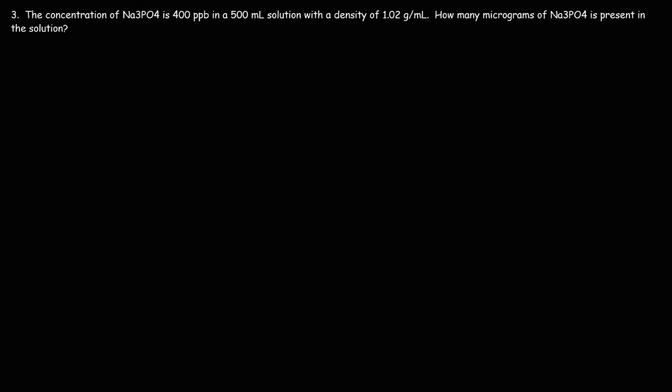Now let's move on to the next problem. The concentration of sodium phosphate, Na3PO4, is 400 parts per billion in a 500 milliliter solution with a density of 1.02 grams per milliliter. How many micrograms of sodium phosphate is present in the solution? Let's start with the mass of the solution. We're given the volume and the density, and combining these two things gives us the mass of the solution.